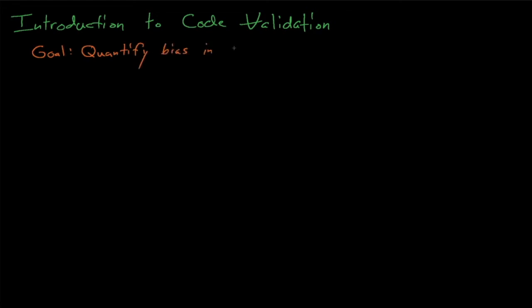Code verification and validation, or V and V, is the process that allows us to confirm the accuracy of these modeling and simulation tools. So what's the difference between verification and validation?